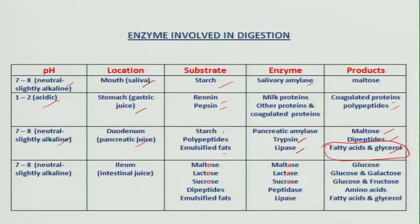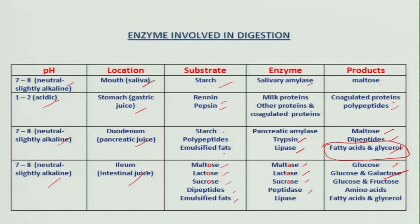Fat digestion is complete at that stage. The food then reaches the ileum, where the pH is again neutral, and it acts on maltose, lactose, sucrose, dipeptides, and emulsified fats. The enzymes maltase, lactase, sucrase, peptidase, and lipase act on these substrates. The final products produced are glucose — galactose is converted into glucose, and fructose is also converted into glucose — then amino acids from proteins, and fatty acids and glycerol from fats.